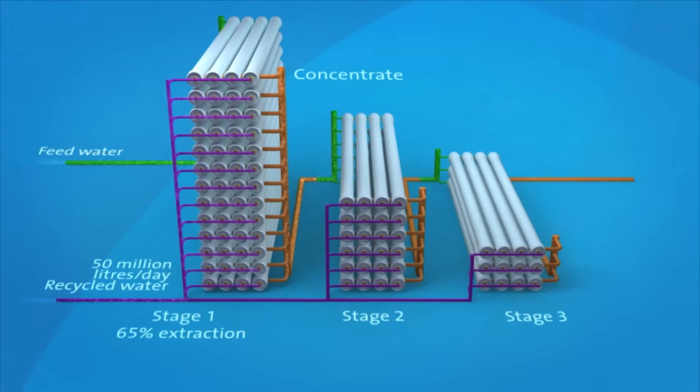65 percent of recycled water is extracted at stage one. The remaining 35 percent is passed through stage two, where a further 10 percent is extracted. The final 25 percent is passed through stage three, where the last 5 percent of recycled water is extracted.